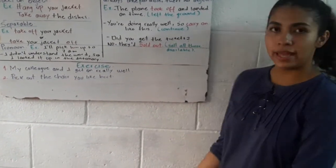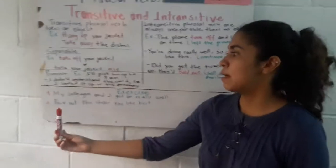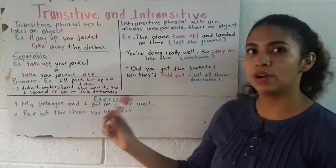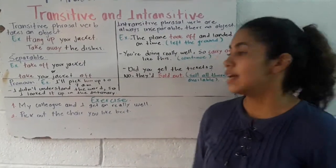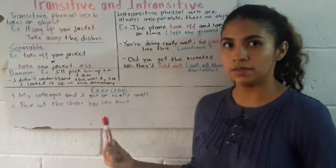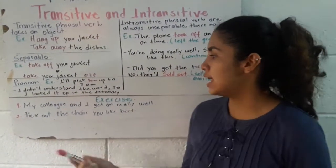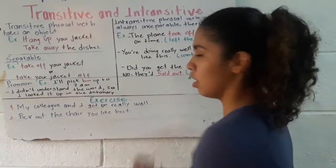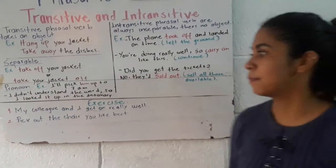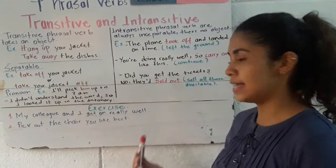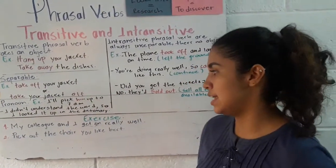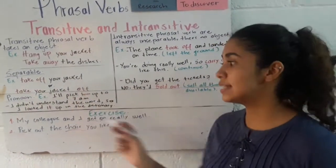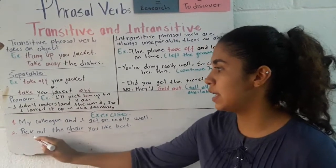Now, let's move on to some exercises. The first exercise is: 'My colleague and I get on really well.' How can we know if this sentence is transitive or intransitive? As we can see, there is no object here, so this is an intransitive phrasal verb. The phrasal verb is 'get on.' Another exercise: 'Pick out the chair you like best.' Here we have an object — chair — which means this sentence uses a transitive phrasal verb. The phrasal verb is 'pick out.'